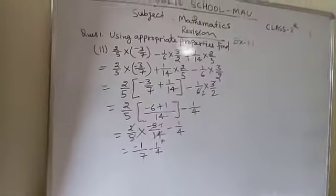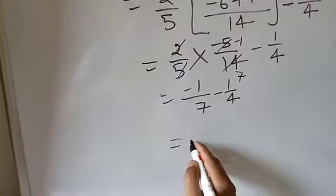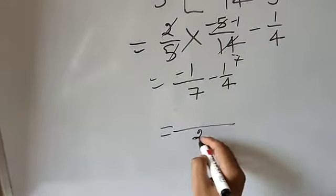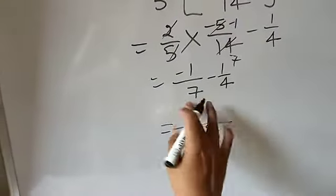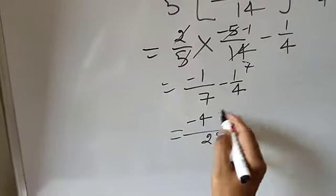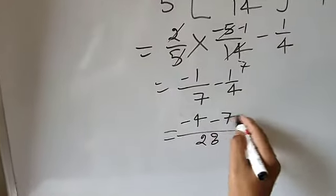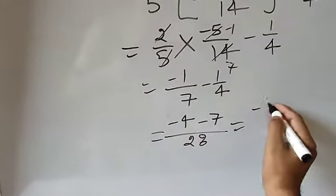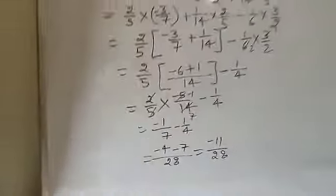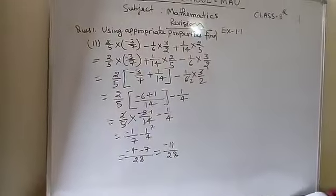Now you need to add and simplify. The LCM will be 28. 4 into minus 1 is minus 4, and 7 into minus 1 is minus 7. So it is minus 11 upon 28. The answer of the second part is minus 11 upon 28.